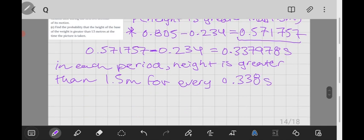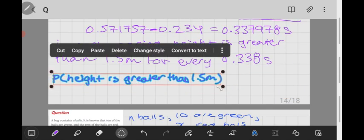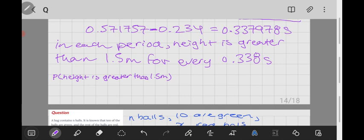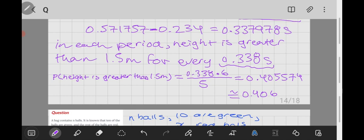So then we can find the probability that height is greater than 1.5 simply by taking the times at which our height should be greater than 1.5, multiplying by the number of peaks or cycles that we have within the first five seconds and dividing by the total number of time 0.406. And that would be the probability that the height is greater than 1.5 meters in the first five seconds. And that is all for this question.